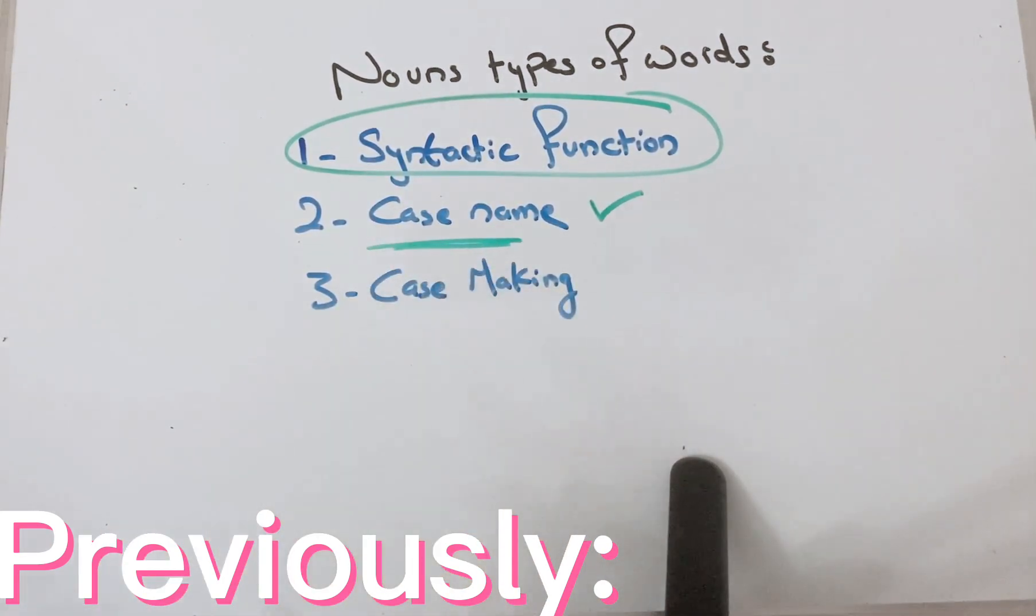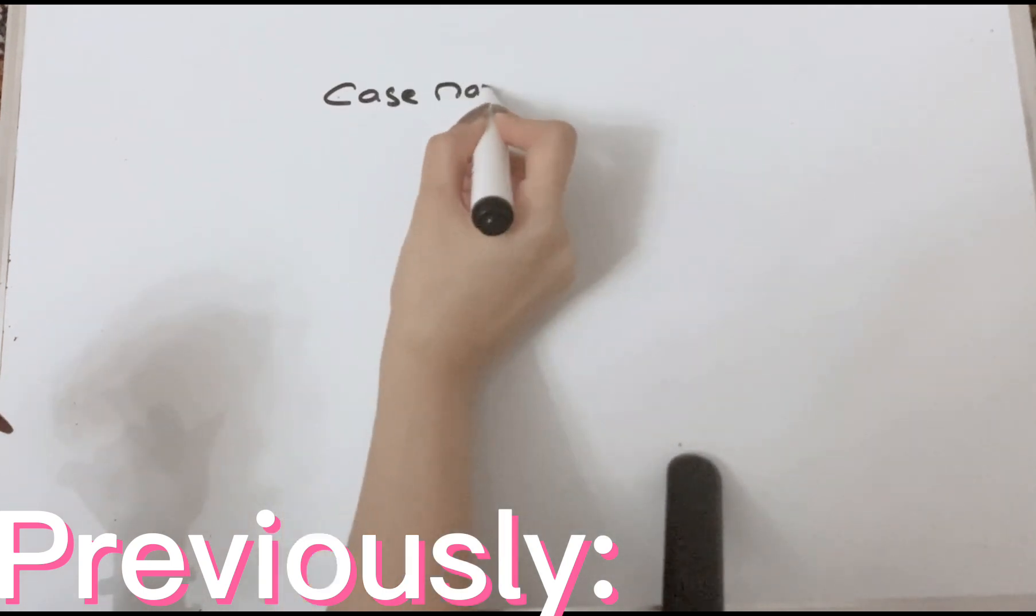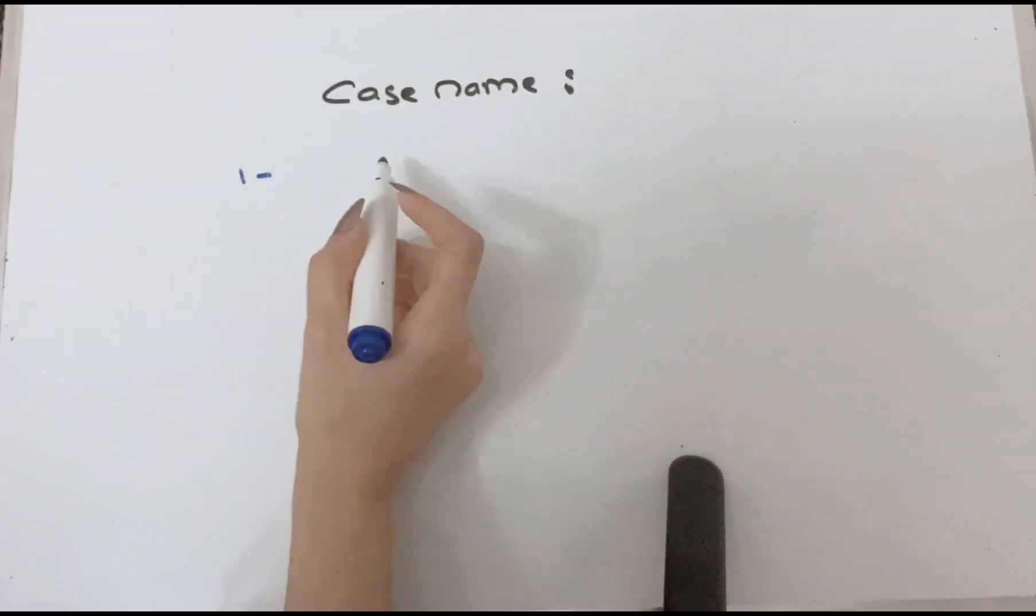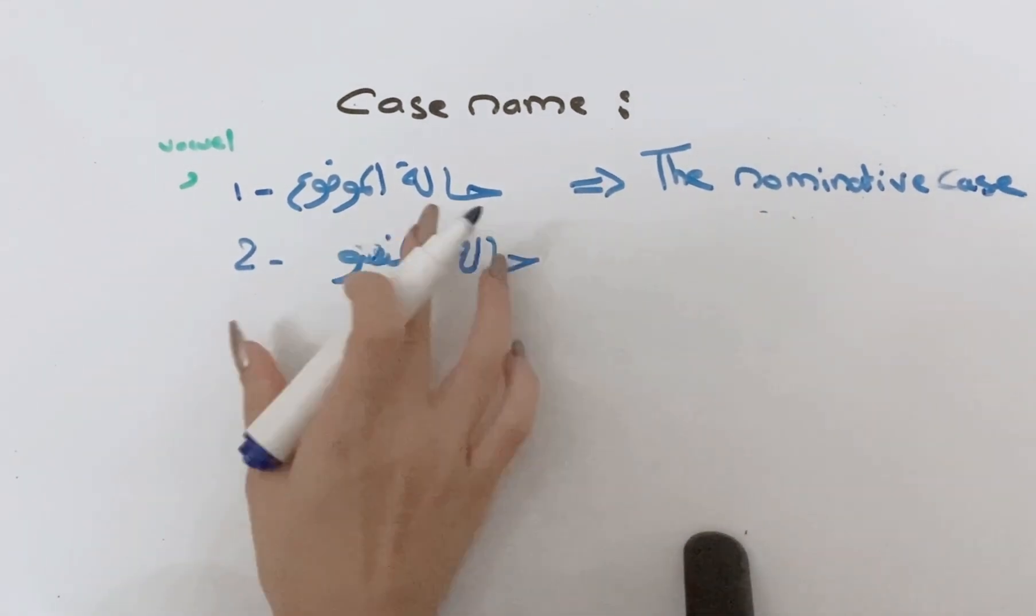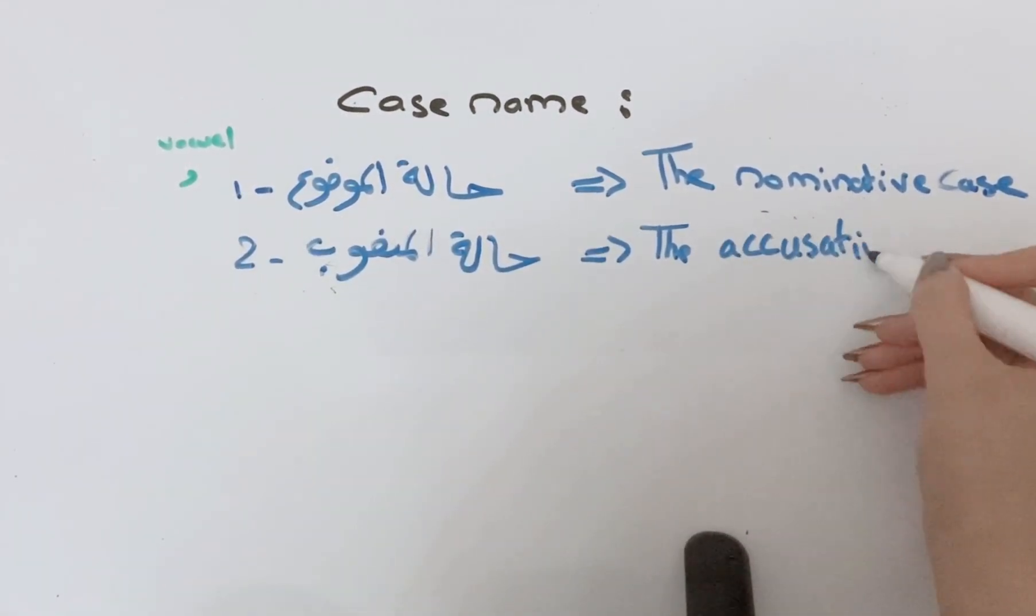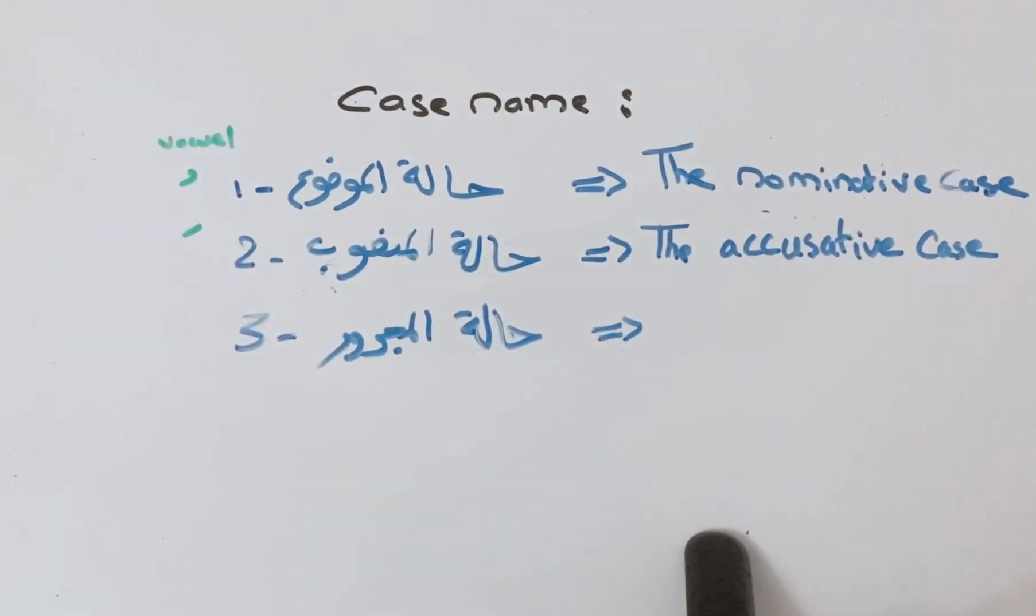There are three cases for Arabic nouns which are the nominative case, the accusative case, and the genitive case.